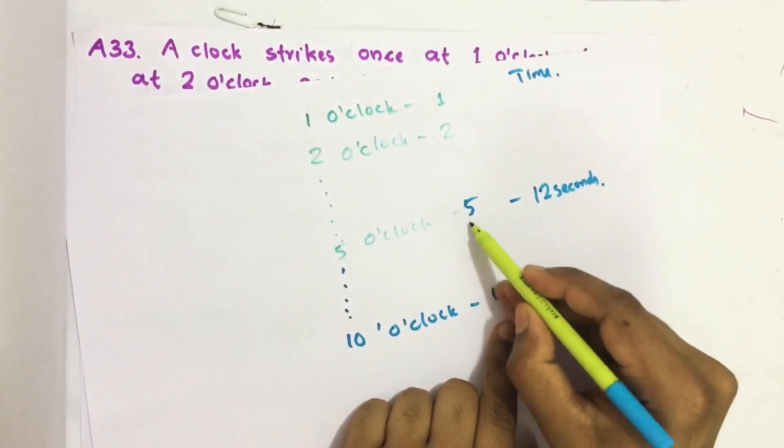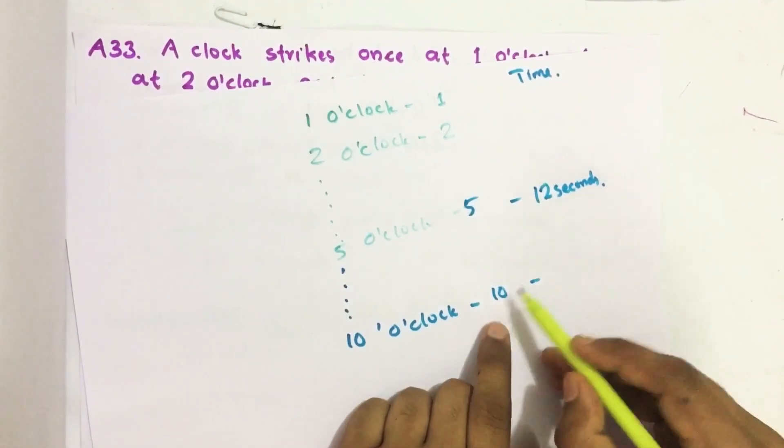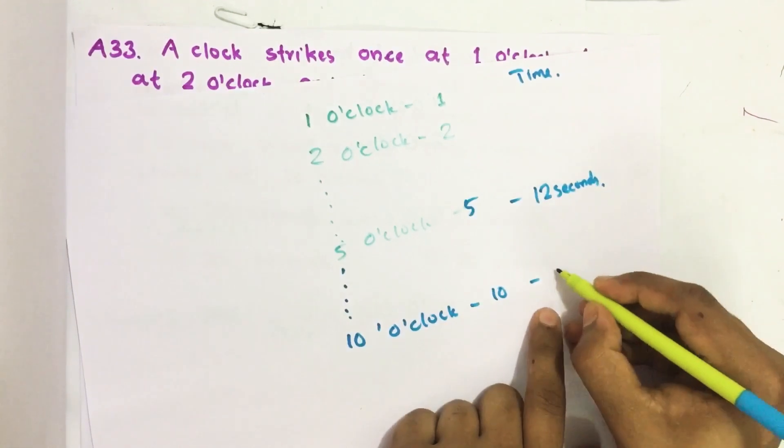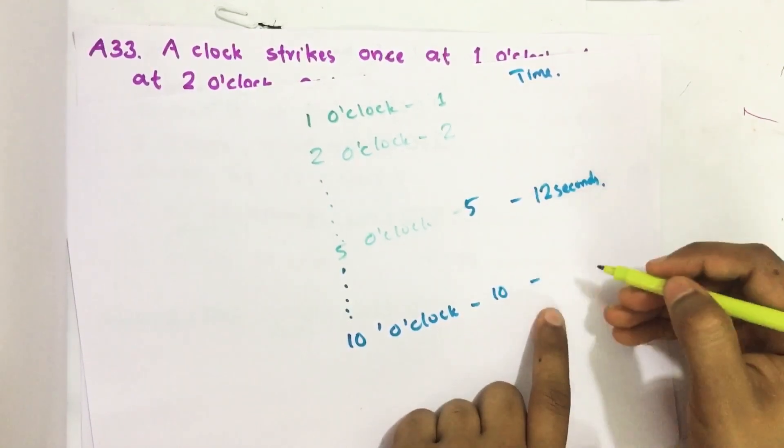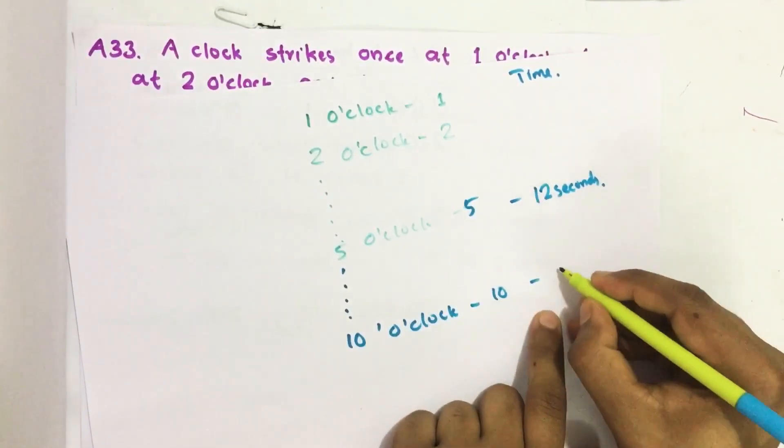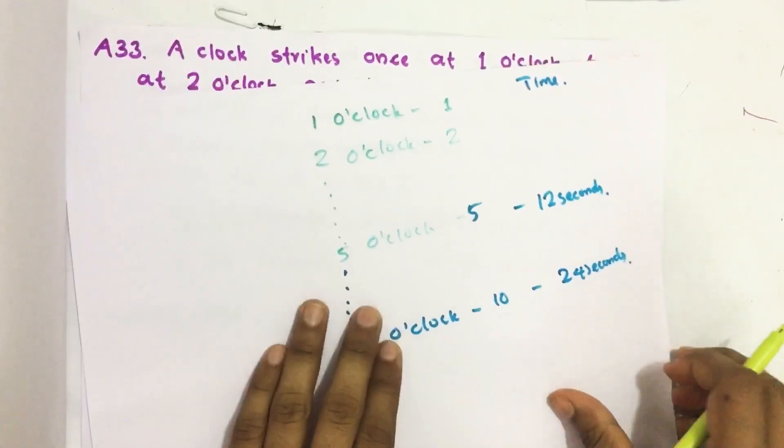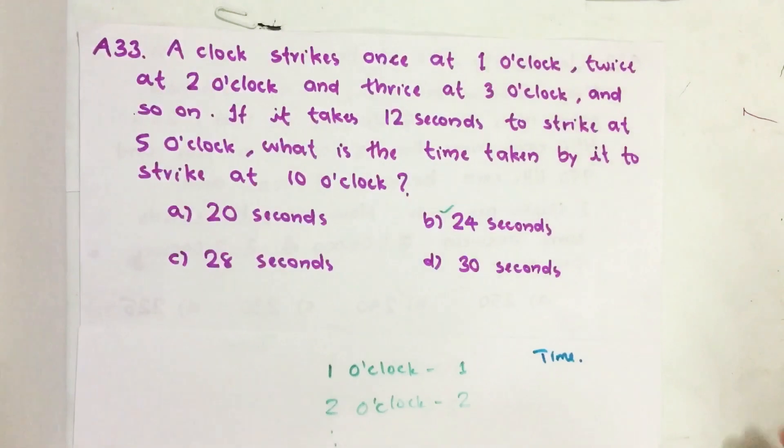So for 5 times it is 12 seconds. 10 times is just double this. That means you take double the time to strike 10 times which is 24 seconds. Our answer is option B, 24 seconds.